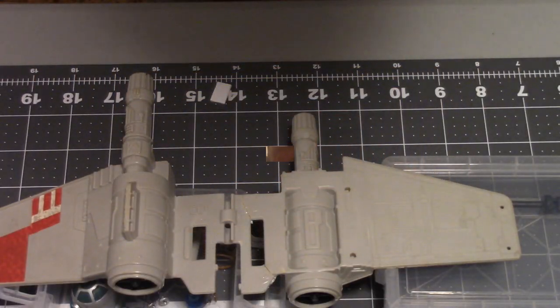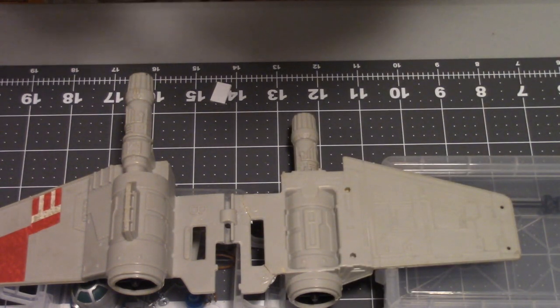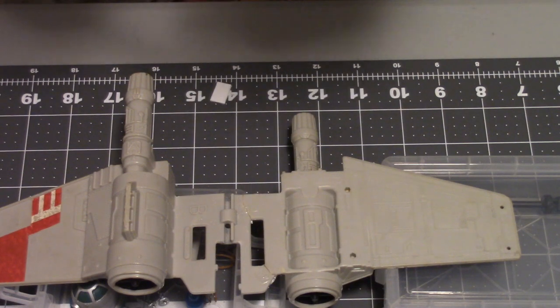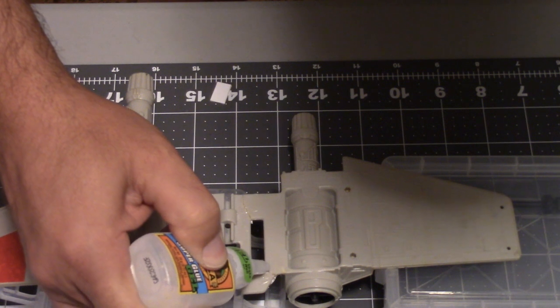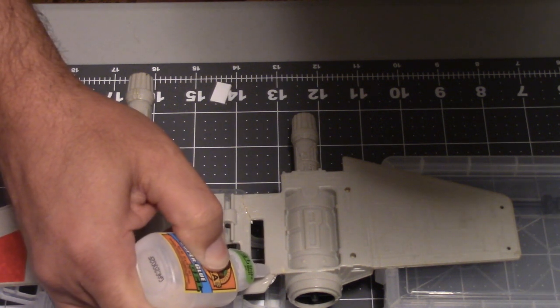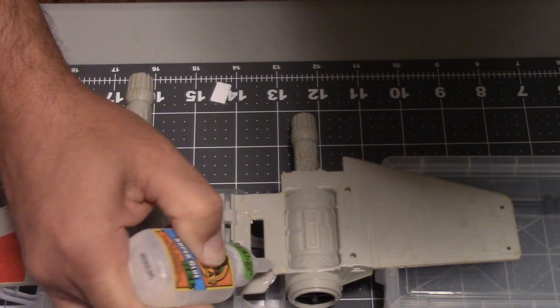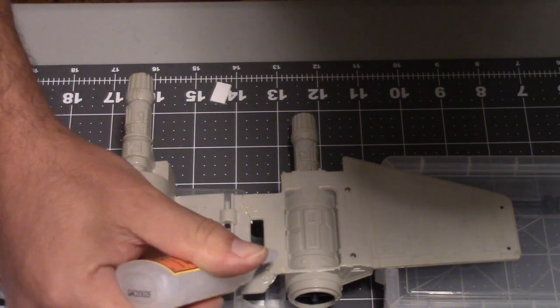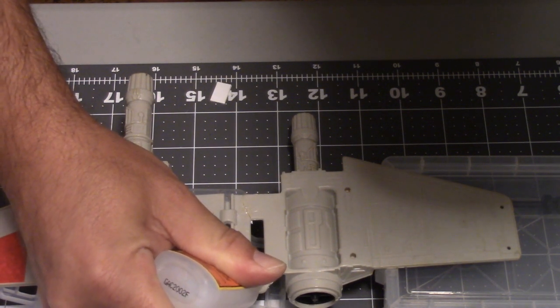Let's get this styrene put back on the wing and see what we can do to get this X-Wing put back together. I've done a test fit on my support pieces. I'm going to use gorilla glue gel and just dab a little bit in. This will either work or you're going to see me glue my hand to the wing.